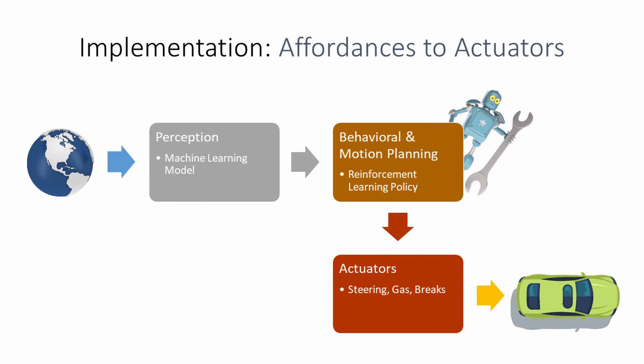Second, the behavioral and motion planning is done. Here, the system described in the paper is implemented by means of a reinforcement learning algorithm — specifically, a twin-delayed deep deterministic policy gradient algorithm. In order to apply these actions, the car actuators are controlled, namely the steering, gas, and brakes.